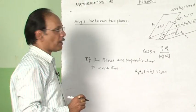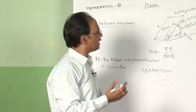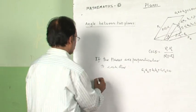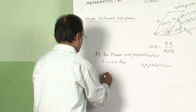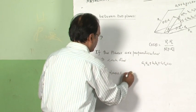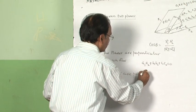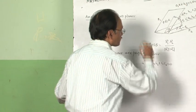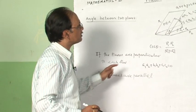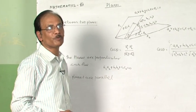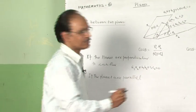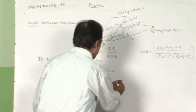If the planes are parallel, then in that case the direction ratios of the normals will be proportional.